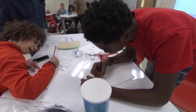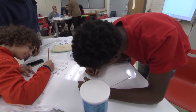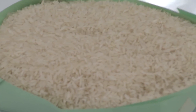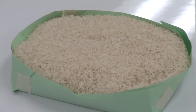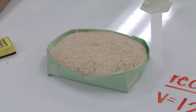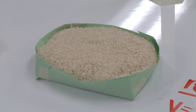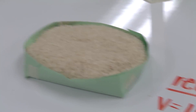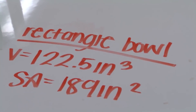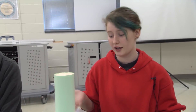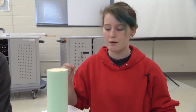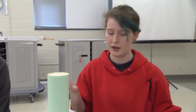For this project we had to use one piece of paper and three pieces of tape to hold as much rice as we could. It could be a box, a cone, or in this case a cylinder, but we couldn't use any more paper than what we had.